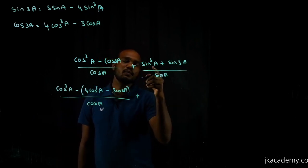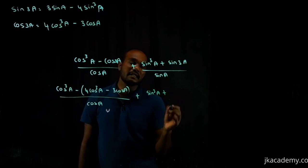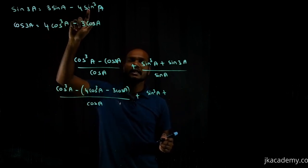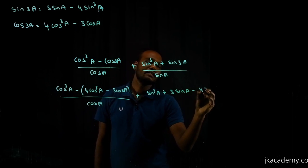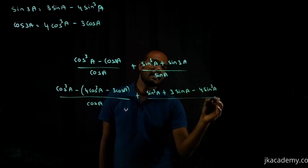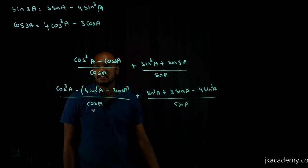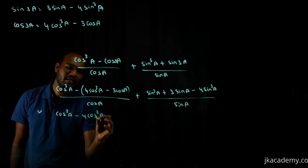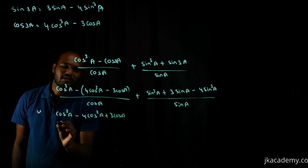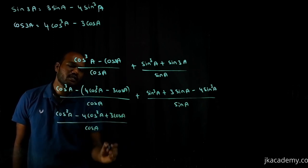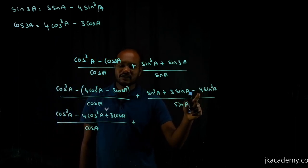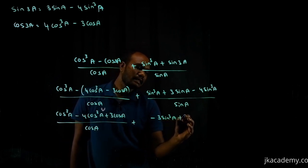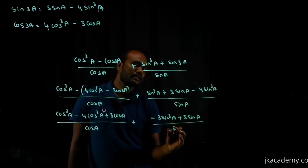In the denominator I'll have cos a. Plus, I have sin cube a — I'll keep it as it is. Plus sin 3a, which is 3 sin a minus 4 sin cube a. So the expression becomes: cos cube a minus (4 cos cube a minus 3 cos a) over cos a, plus sin cube a plus (3 sin a minus 4 sin cube a) over sin a.